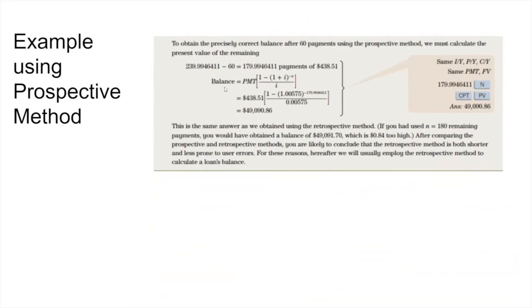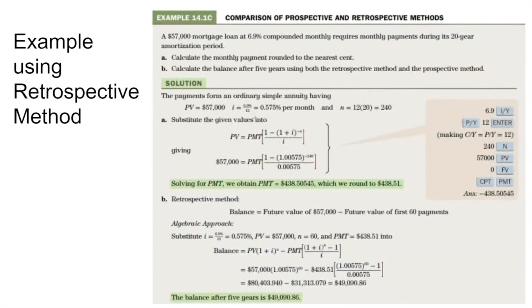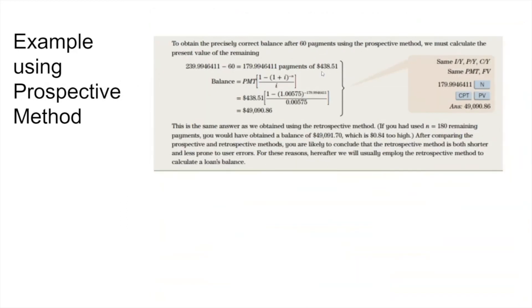Using the prospective method, we're taking all of the payments made after the 60th payment and bringing them back to find their present value. We plug the numbers into the present value formula, and we also get $49,090 — exactly the same result. So that confirms both the retrospective and prospective methods give the same answer.